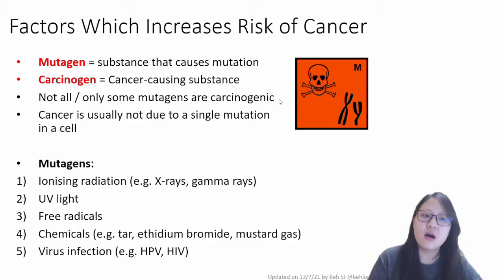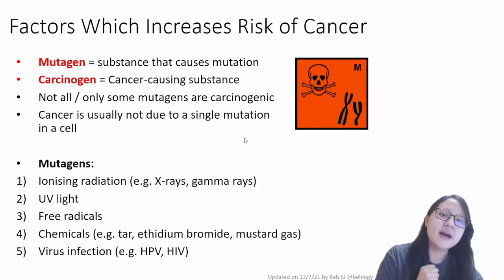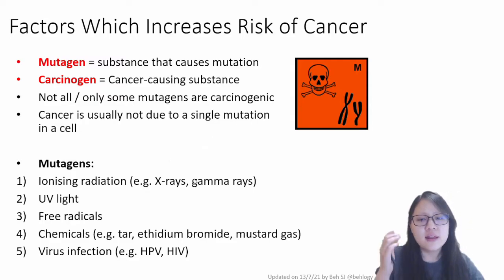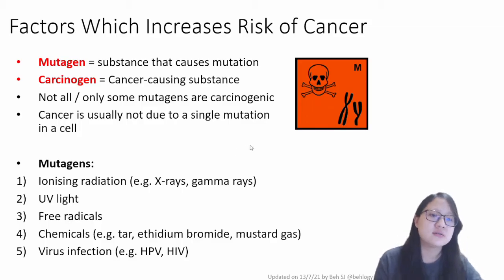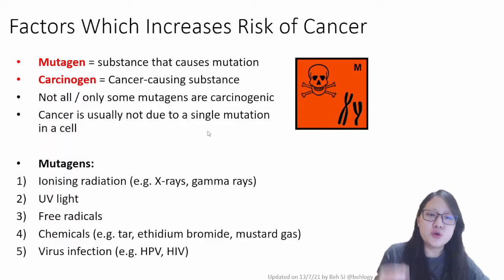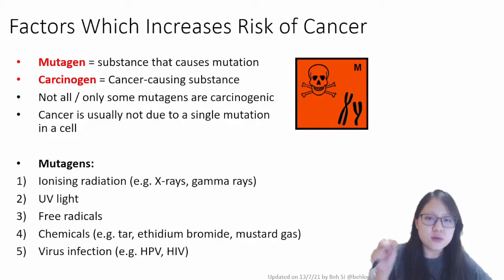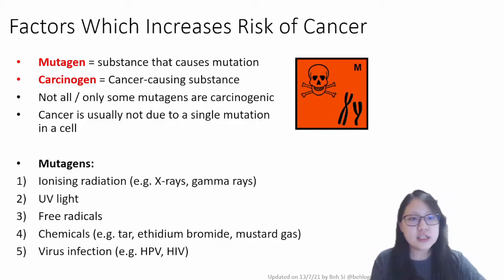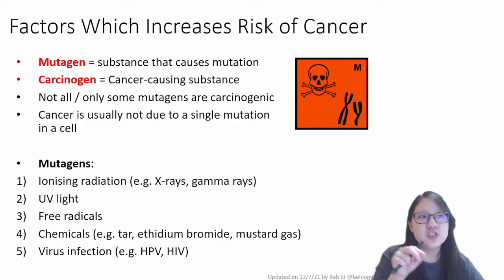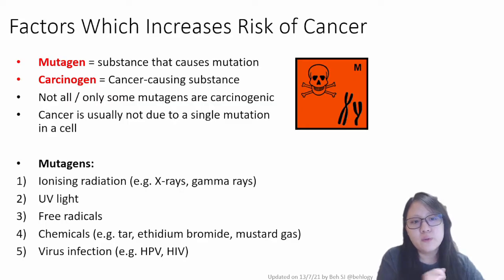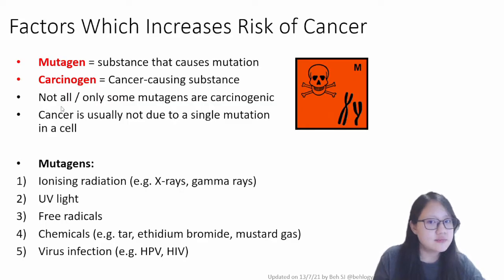Only some of these mutagens are carcinogenic. Why are not all mutations carcinogenic? That's because cancer is usually not due to a single mutation in a cell — it's an accumulation of mutations, and mutations at specific places only cause cancer. Mutations only in specific genes would cause cancer.